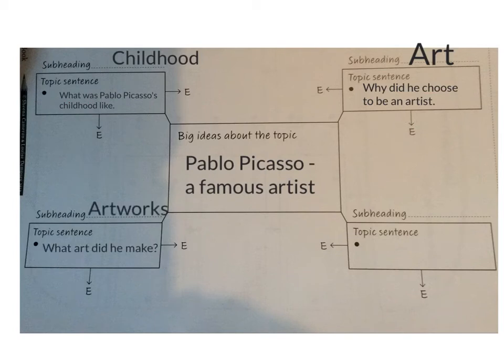The next thing I think children would be interested in reading about is his artwork. So my topic sentence — my main idea — is: what art did he make? That's where I'm going to research and find out about some of his famous artwork. I might even find out a little bit about how much his artwork sold for.